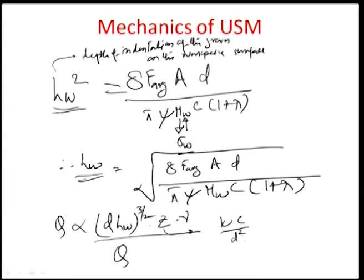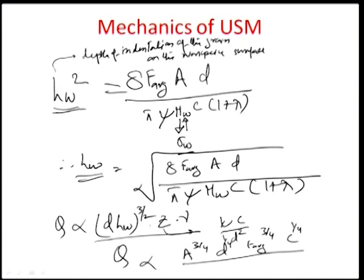After substituting h_w and Z — which is inversely proportional to d squared times c times psi — and nu as the frequency, we get Q proportional to amplitude to the power of 3/4, grain diameter d to the power of 1/4, average force to the power of 3/4, concentration to the power of 1/4, divided by the flow stress or hardness h_w to the power of 3/4, times nu.